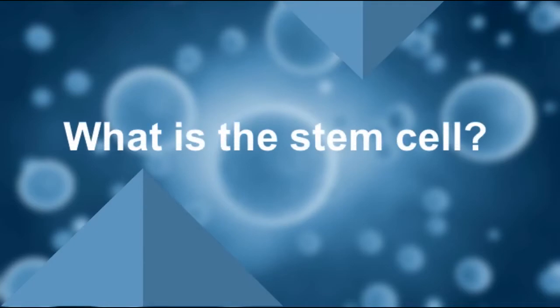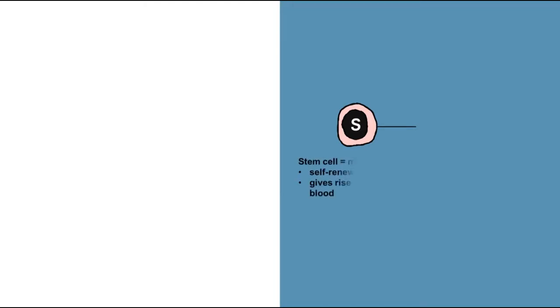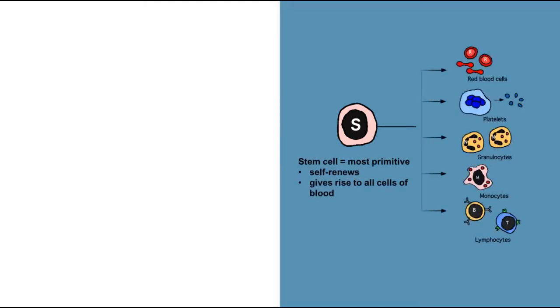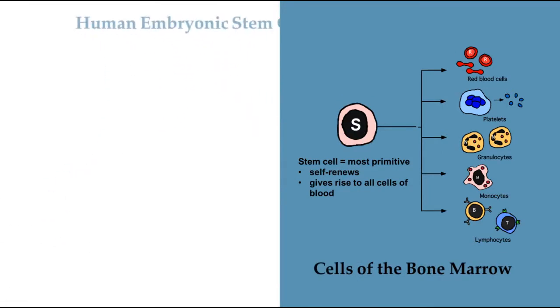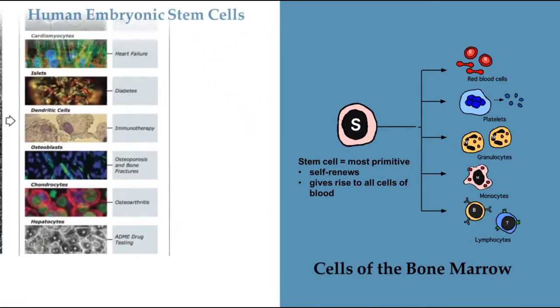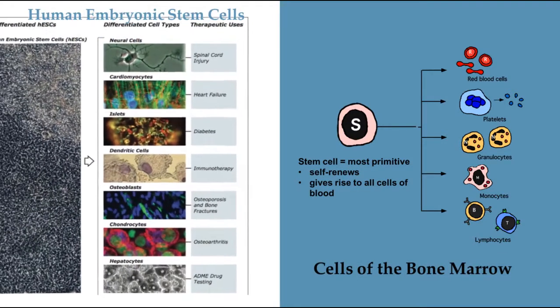First, what is the stem cell? Stem cells are undifferentiated biological cells that can differentiate into specialized cells, and can divide through mitosis to produce more stem cells. They are found in multicellular organisms.